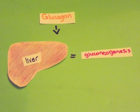Glycogenolysis, the production and release of glucose in the liver, is encouraged. Liver cells absorb amino acids, convert them to glucose, and then release them into the blood.